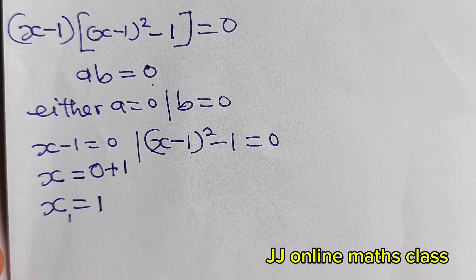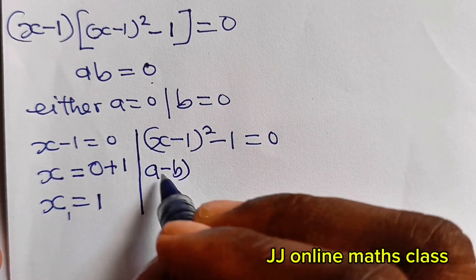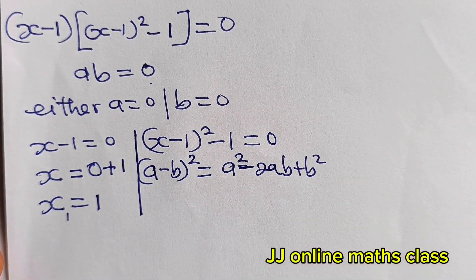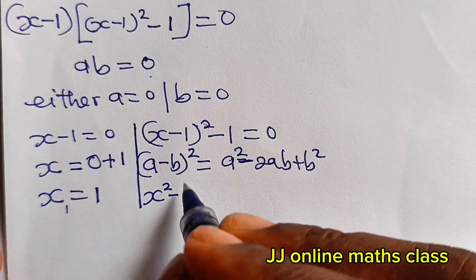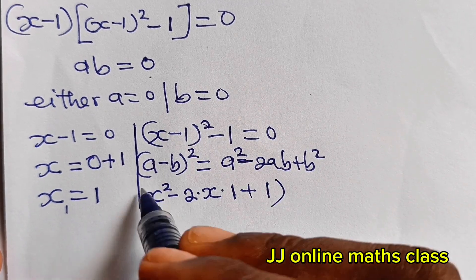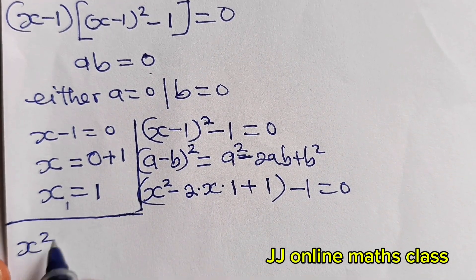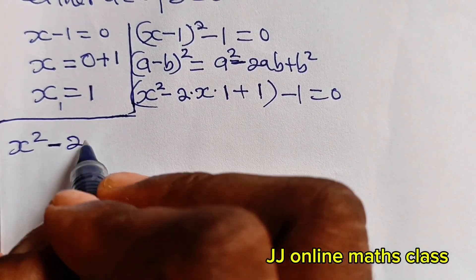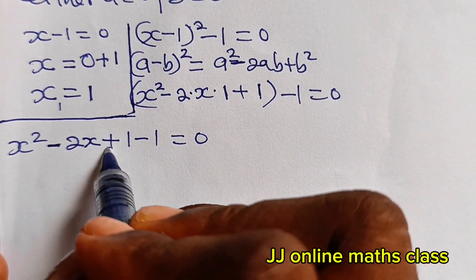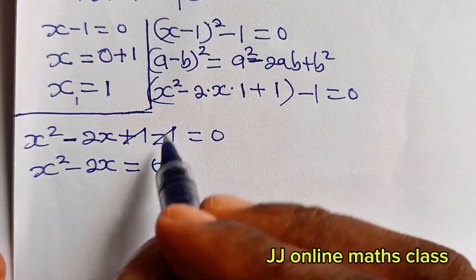Now let's expand (x-1)². Using (a-b)² = a² - 2ab + b², we get x² - 2x + 1. So (x-1)² - 1 = 0 becomes x² - 2x + 1 - 1 = 0. The +1 and -1 cancel, leaving x² - 2x = 0.